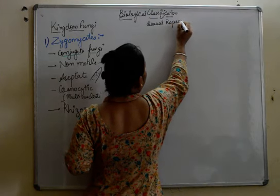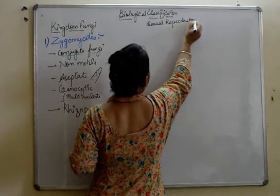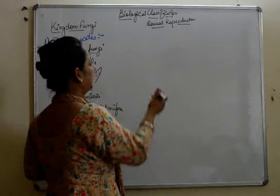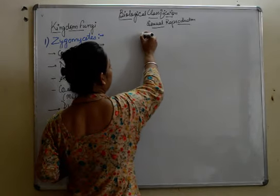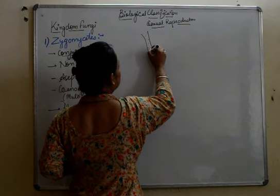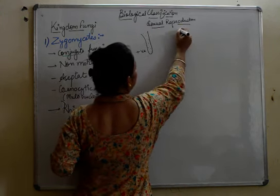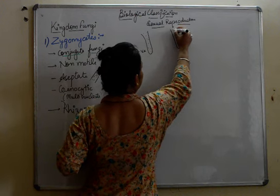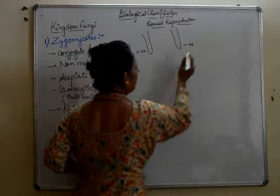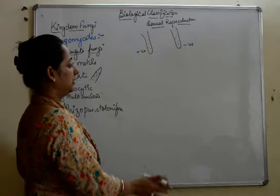In sexual reproduction, the hyphae will have positive or negative strains. The positive strain hypha will be considered as males and the negative strain hypha will be considered as females. They are aseptate, meaning without any septa present inside them, and they are multi-nucleate.